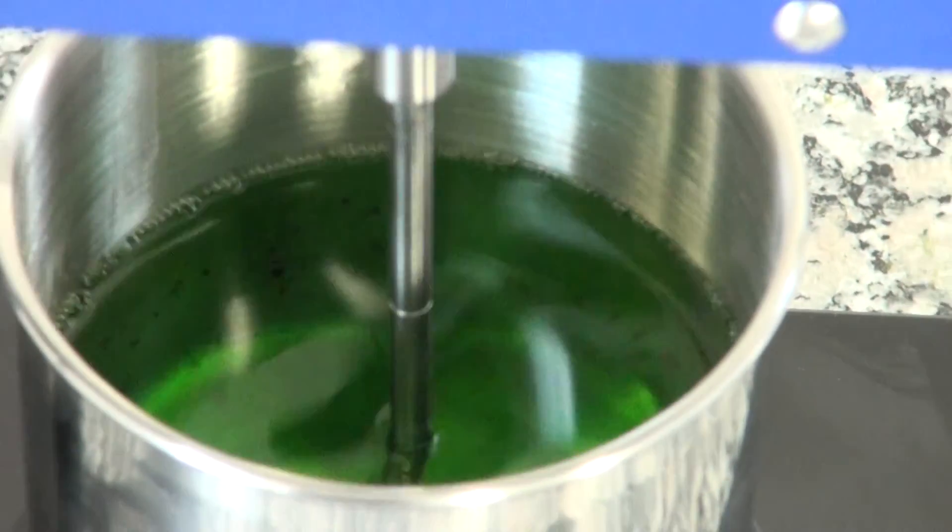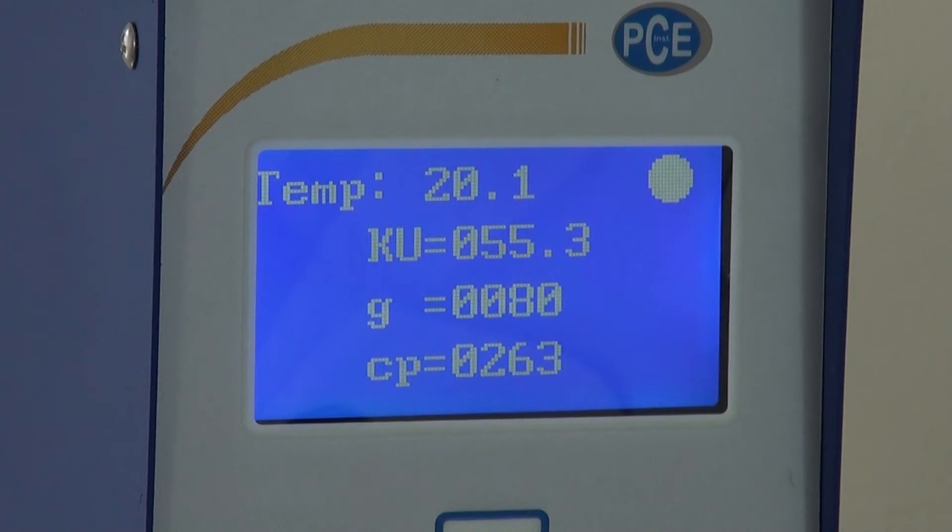Simultaneously the KU value, the Gram value and the Centipoise value are displayed. We measure a KU value of 55.3.